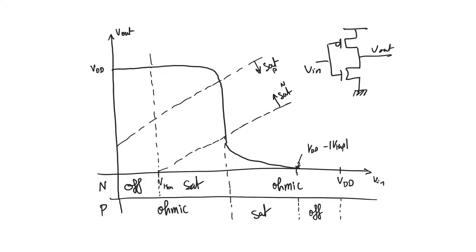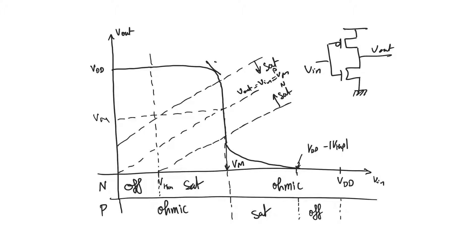There are three important points. The first is Vm, the logic threshold, which is the point where V-output is equal to V-input. It's obtained by intersecting the line V-output equals V-input (i.e., Y equals X) with the VTC. The other two points are where the slope of the VTC is equal to minus one. The lower of these input values is V-input-low, and the higher is V-input-high.